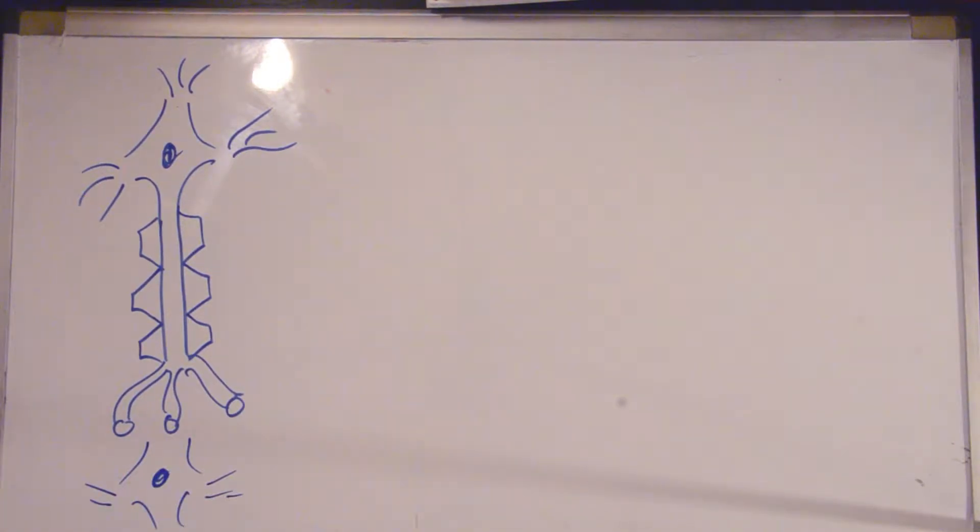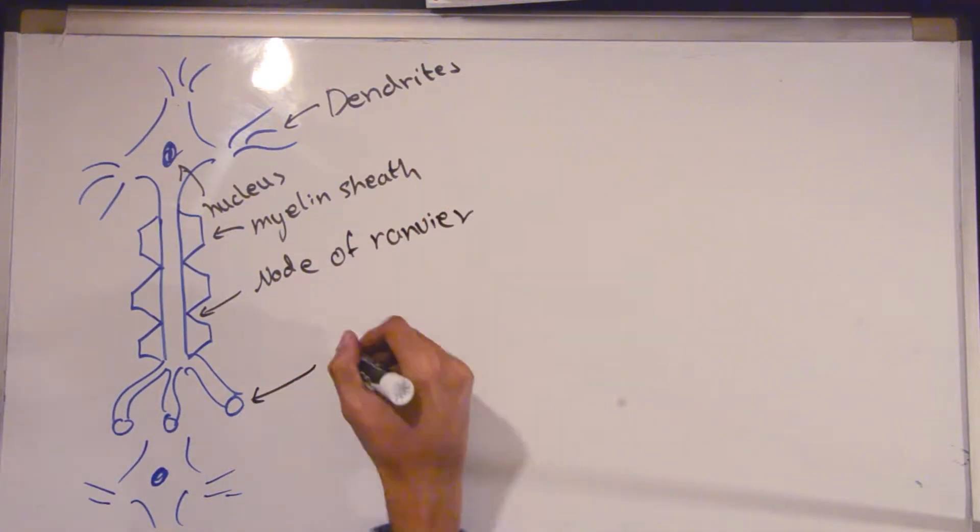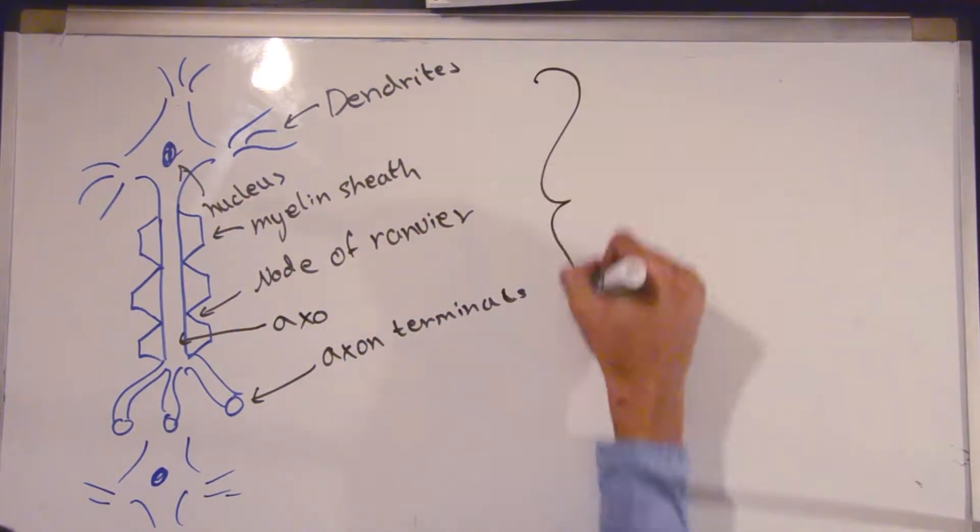This is a neuron. It is made up of dendrites, a nucleus, myelin sheath, nodes of Ranvier, axon terminals, and an axon.